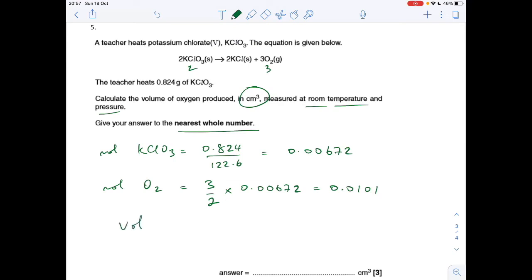The volume at RTP is going to be the moles, 0.0101, times 24,000 again, because we need it in cm cubed, and to the nearest whole number, that comes out at 242.